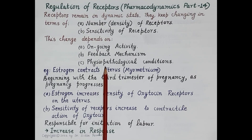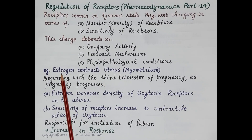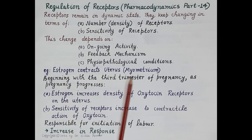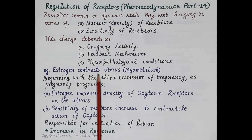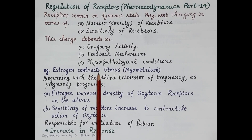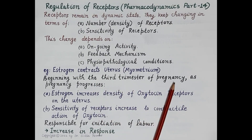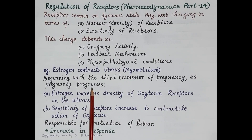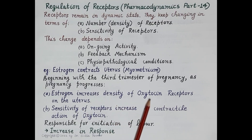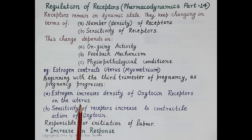This change also depends on the physiopathological conditions of the body. Let's understand regulation of receptors with an example. Estrogen is a hormone that contracts the myometrium, the smooth muscles of the wall of the uterus, which is necessary for childbirth. Beginning with the third trimester of pregnancy, estrogen increases the density or number of oxytocin receptors in the myometrium.